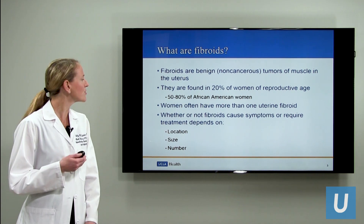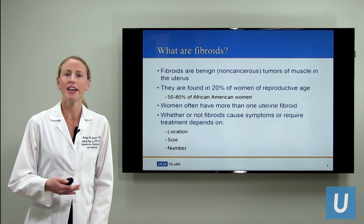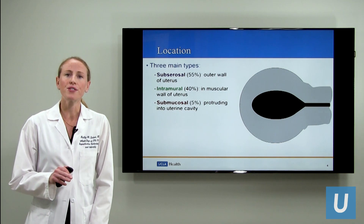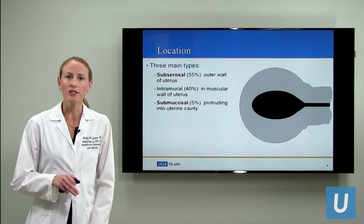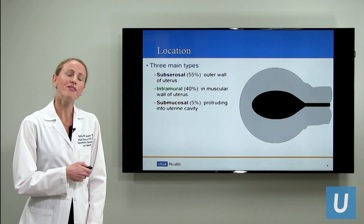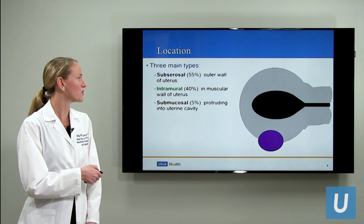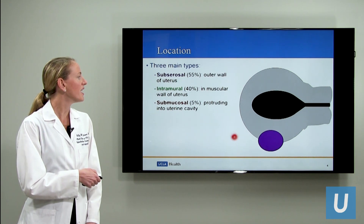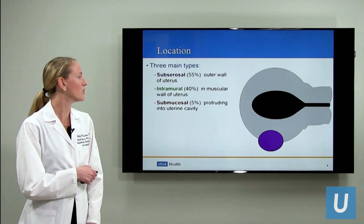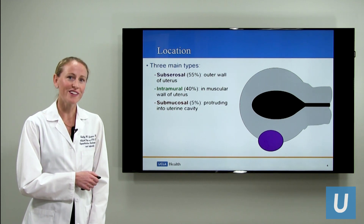Those factors are location, size, and number. So let's focus on the first: location. There are really three main types of fibroids. The first is a subserosal fibroid, and this arises from the outer wall of the uterus. This is the most common type of fibroid.